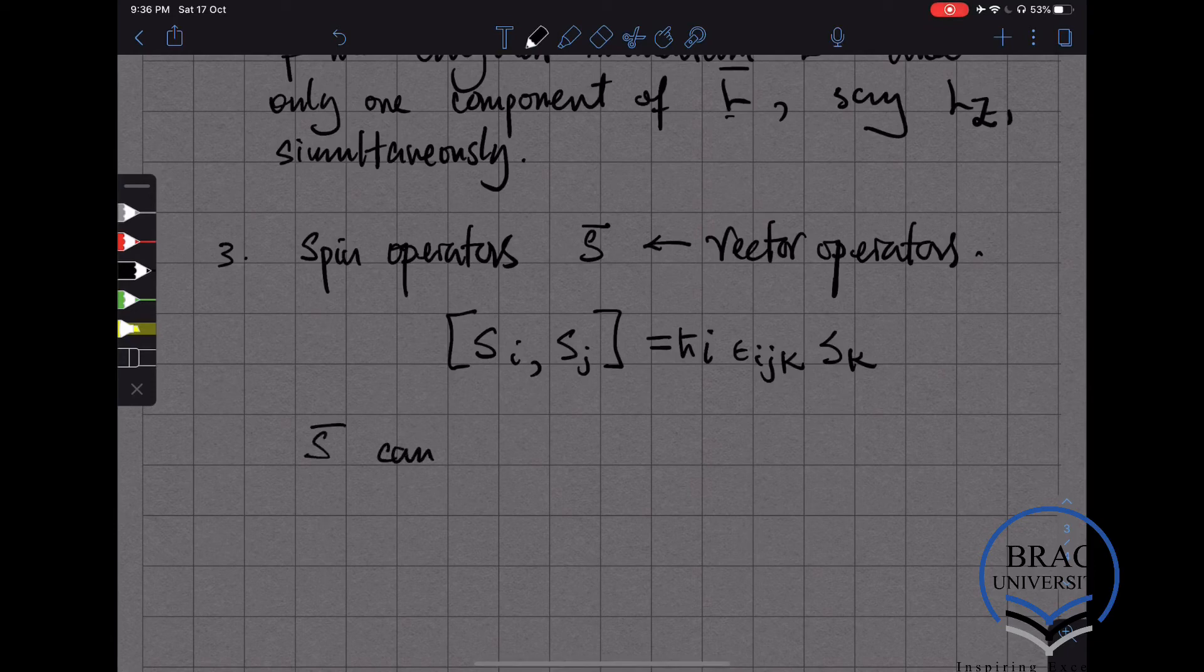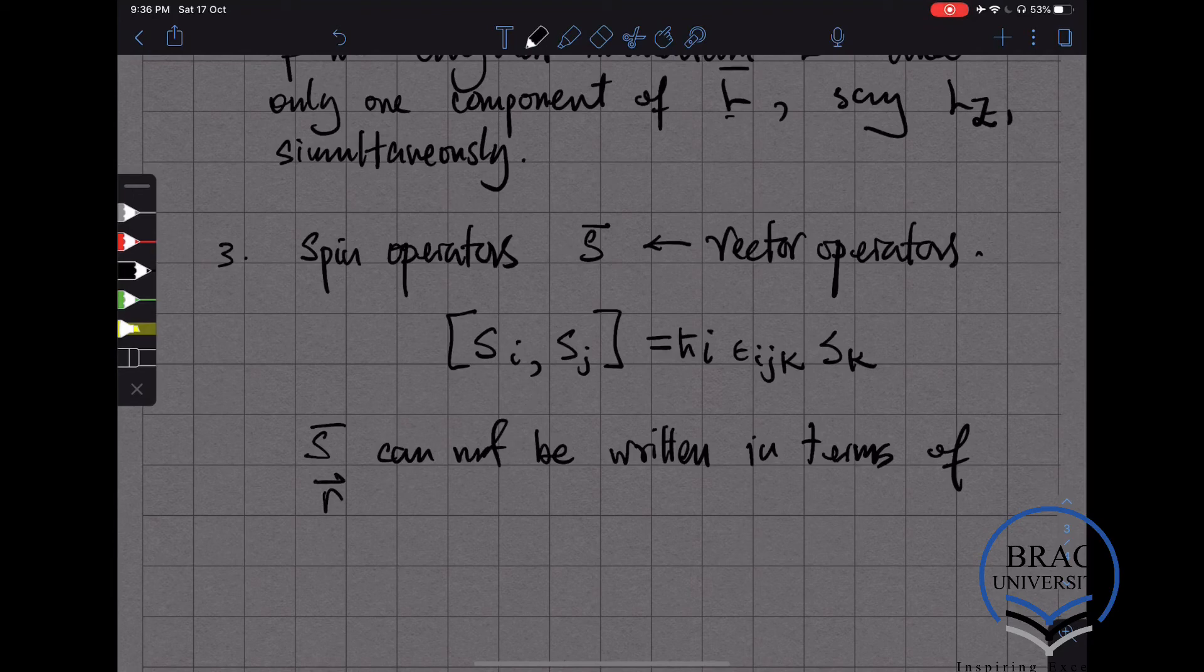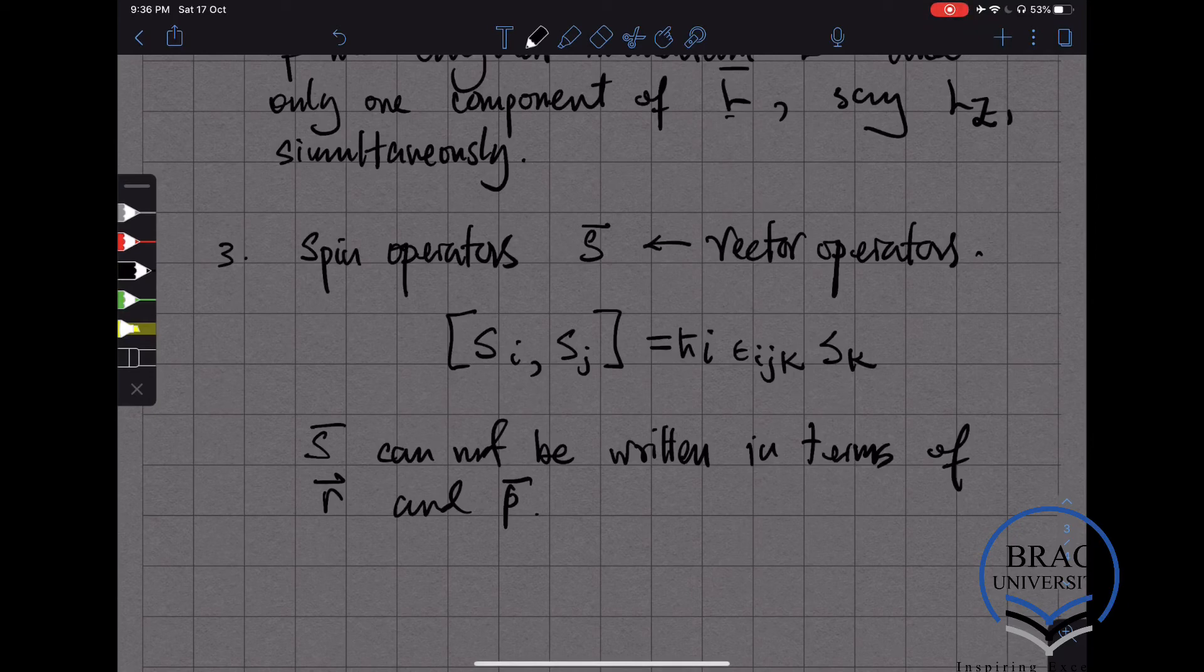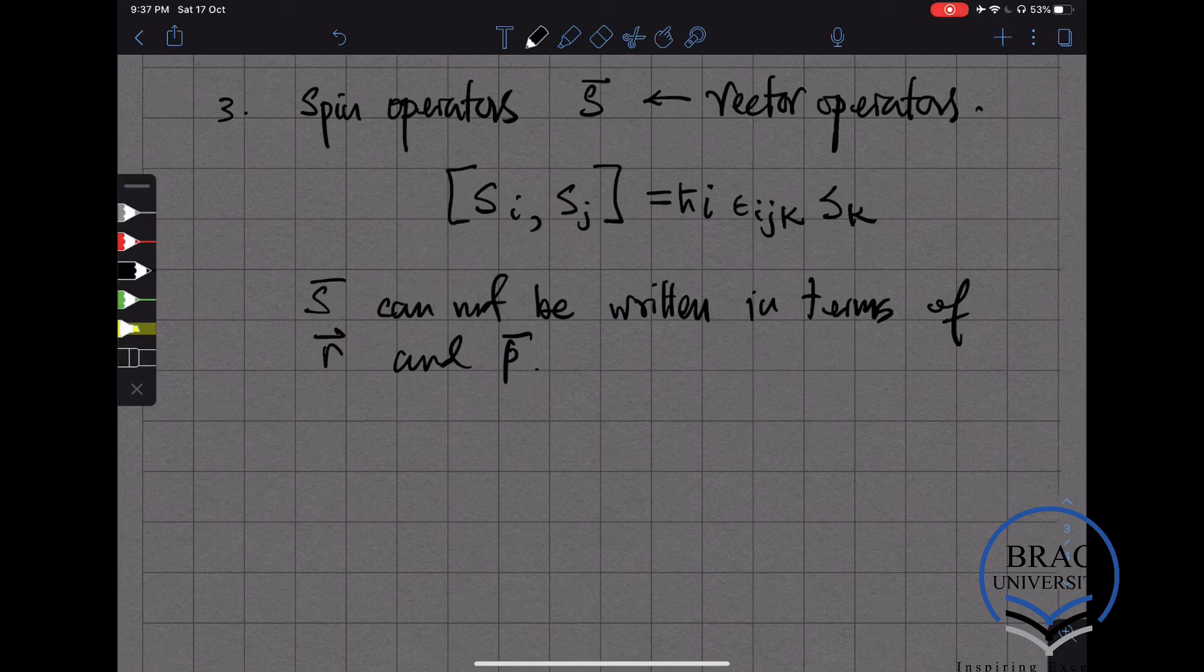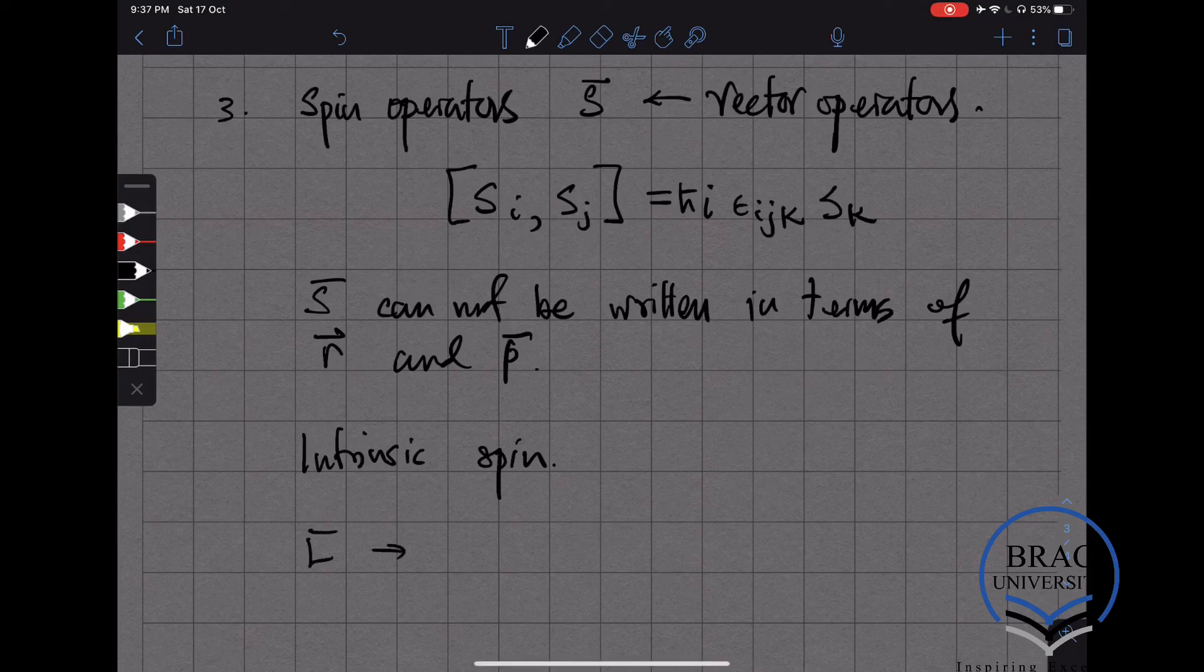However, spin operators cannot be written in terms of some position operator and some momentum operator. That's the thing about spin operators: although they satisfy the same algebra as the angular momentum algebra, they cannot be expressed as you could express L. The spin degree of freedom associated with spin operator is called an intrinsic spin because they cannot be thought of as rotation of some extended system. If s is called the intrinsic spin, then L is called the orbital angular momentum.